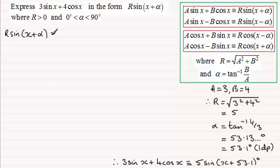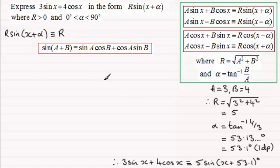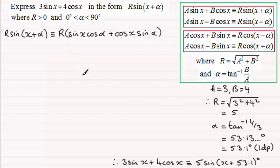R sine of x plus alpha, and then just put that it's identical to R, and then now we need to expand the sine of x plus alpha. And you're going to need to remember this identity. Remember the sine of a plus b is identical to the sine of a cosine of b plus cosine of a times sine of b. And in this example, a is the x and b is the alpha.